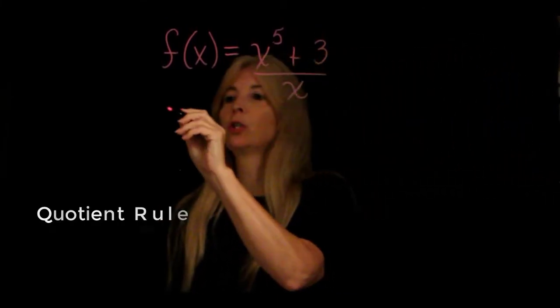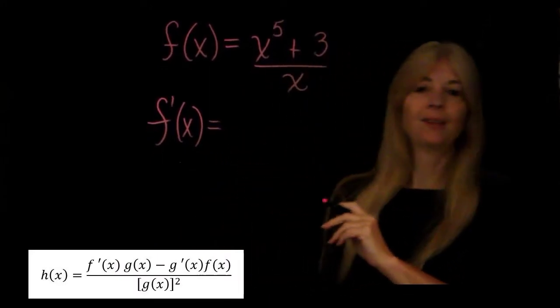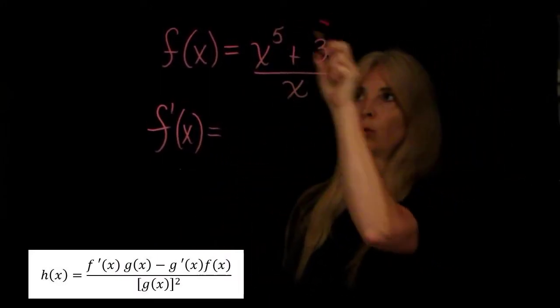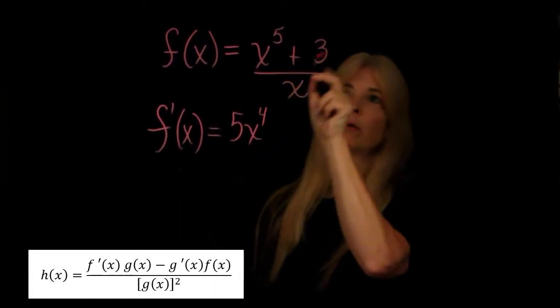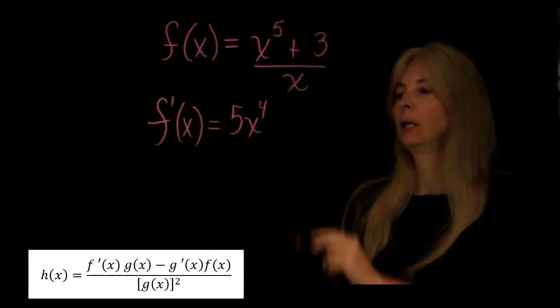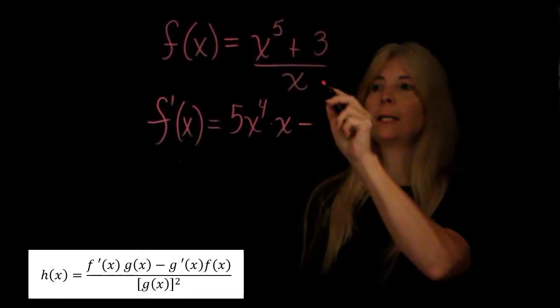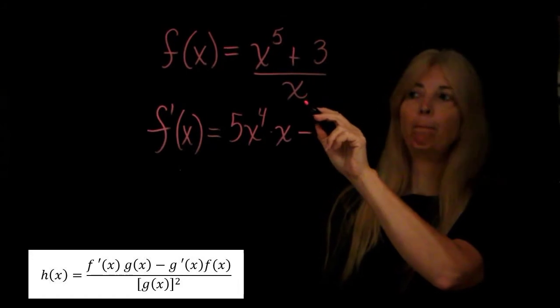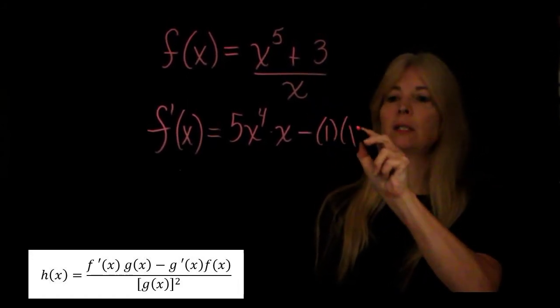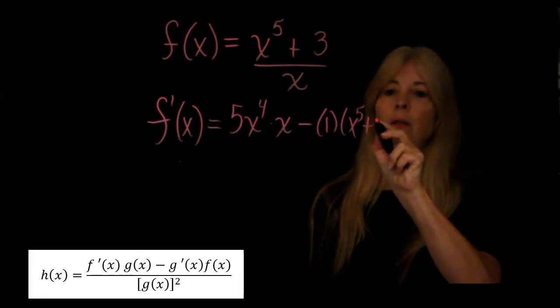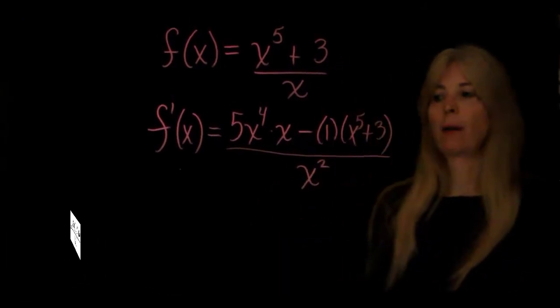So the quotient rule says, take the derivative of the top. The top would be 5x to the fourth - the derivative of 3, the constant, goes away - times, leave the bottom alone, minus, take the derivative of the bottom, which would be 1, times leave the top alone, and then square the bottom.